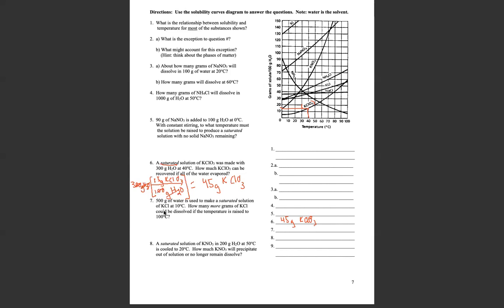500 grams of water is used to make a saturated solution of potassium chloride. So not the same as potassium chlorate, potassium chloride at 10 degrees Celsius. Now, then it says how many more grams of potassium chloride could be dissolved if the temperature is raised to 100 degrees Celsius. So if we're going to go from 10 to 100, let's start at the 10 degree mark. And we're going to go up until we find the potassium chloride line. I tried to make this a little bit of a straighter line here. And here's the potassium chloride line.